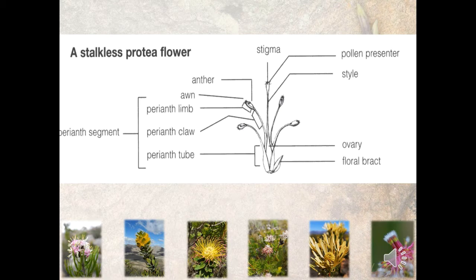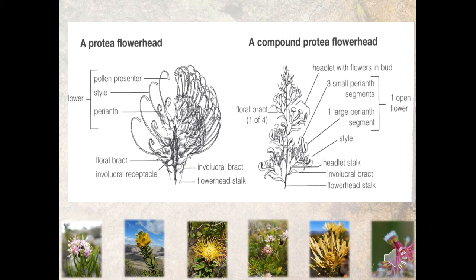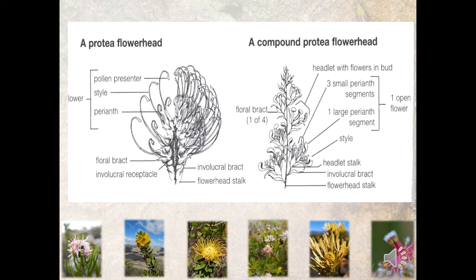Protea flowers are clustered either into a capitulum, like in Protea and Leucospermum, where you have a common receptacle to which all the flowers are attached. This receptacle can be cylindrical, as in Leucospermum, or flat, as in Protea. You have your involucral bract at the base of the flower head, then the floral bract at the base of each individual flower, and then the perianth, which is sometimes fused together, and then the style and the pollen presenter.